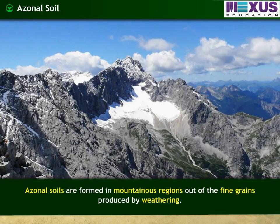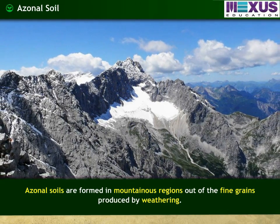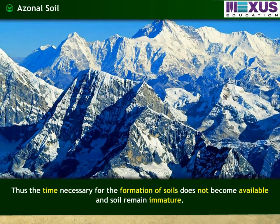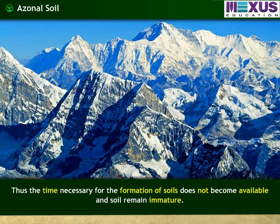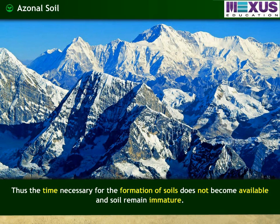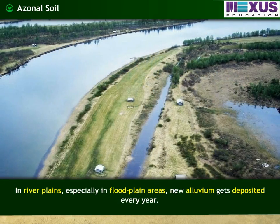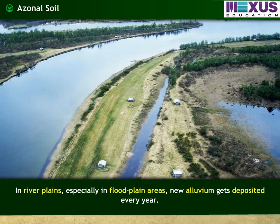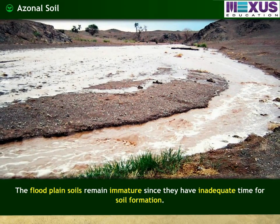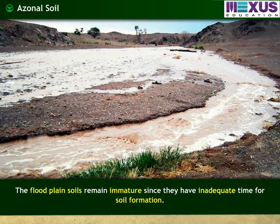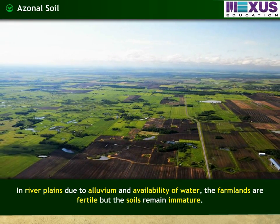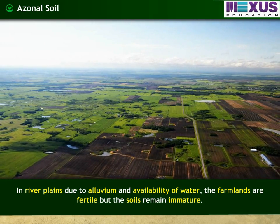Azonal soils are formed in mountainous regions out of the fine grains produced by weathering. This fine grain material constantly slides down the slope, so the time necessary for soil formation is not available and the soil remains immature — for example, the Himalaya mountains. In river plains, especially flood plain areas, new alluvium gets deposited every year. The flood plain soils remain immature since they have inadequate time for soil formation. Due to alluvium and availability of water, the farmlands are fertile but the soils remain immature.